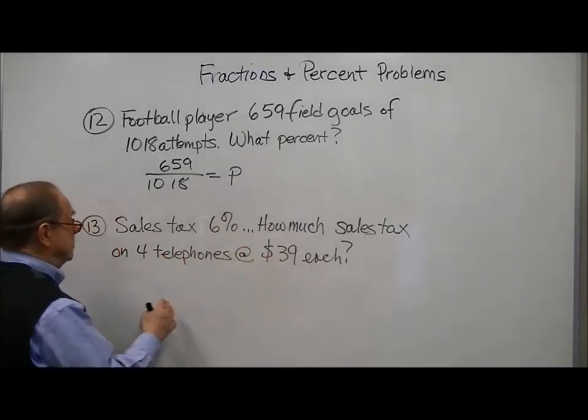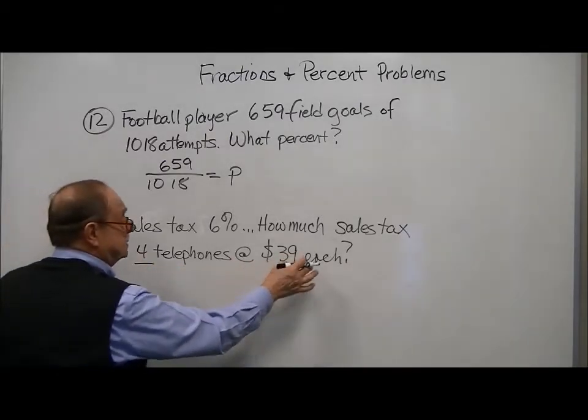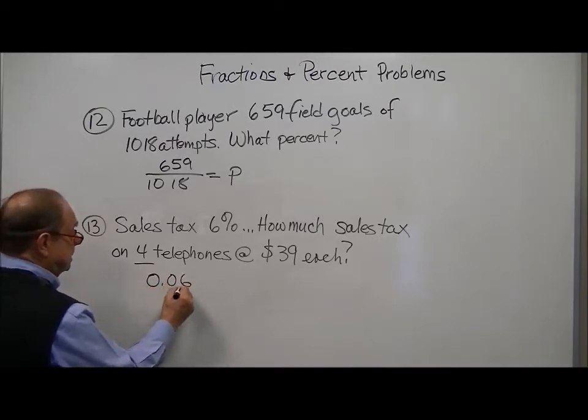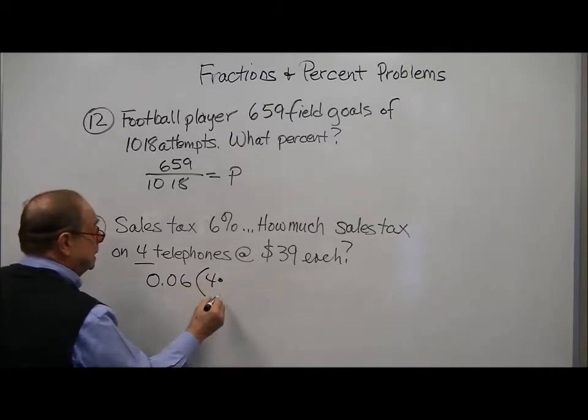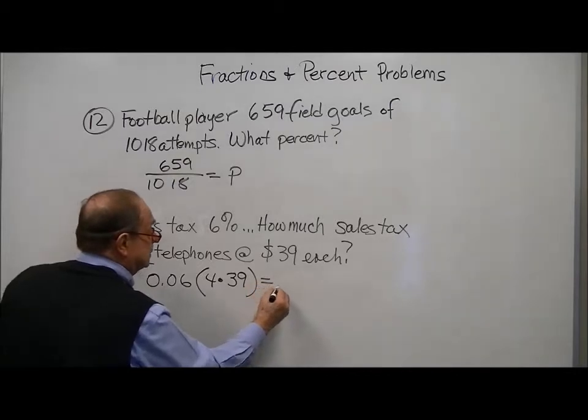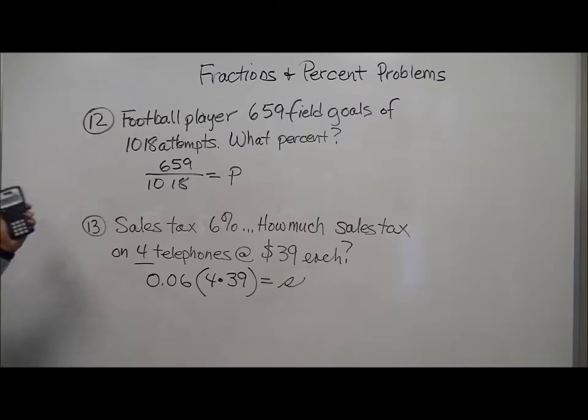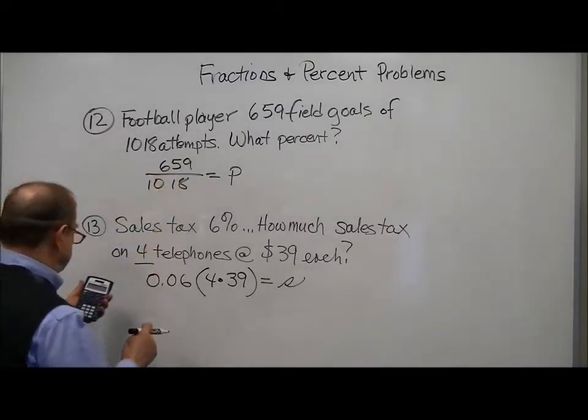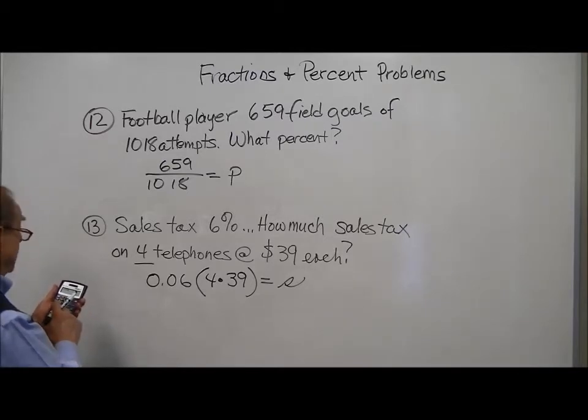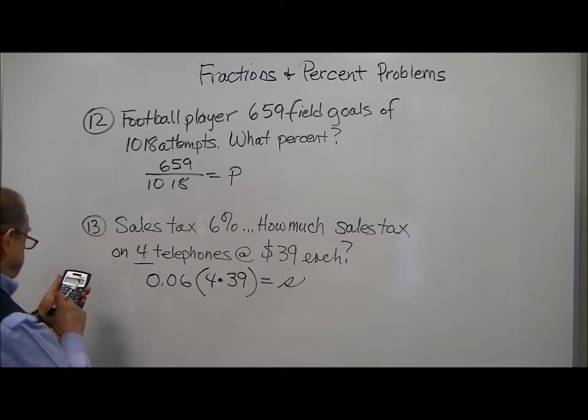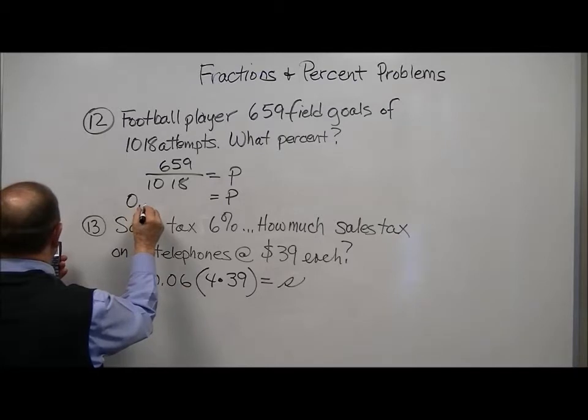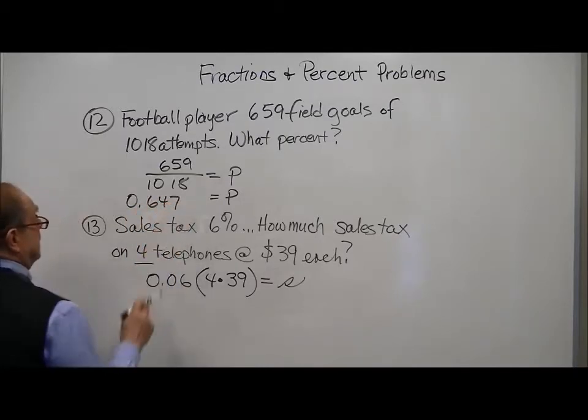A sales tax of 6%. How much sales tax does someone pay if they buy four telephones at this much each? So basically it's going to be 6% of the product of 4 times 39. This will give you the sales tax. Some of these problems are very basic, but hopefully by getting some basic equations set up and a strategy for solving them, this will be useful.